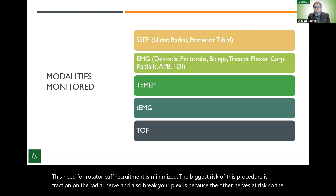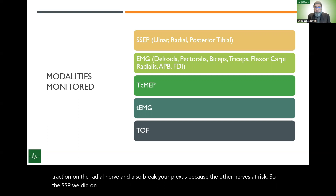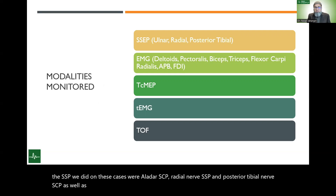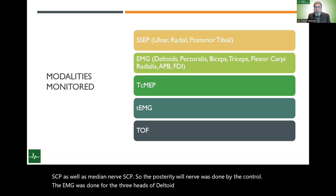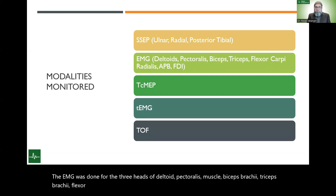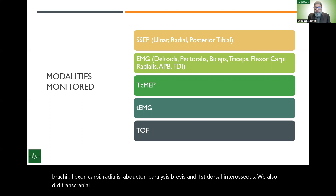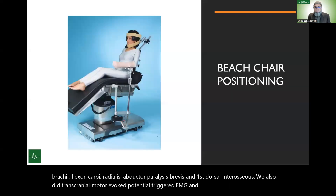The SSEPs performed on these cases were ulnar nerve, radial nerve, posterior tibial nerve, and median nerve. The posterior tibial nerve was done as a control. EMG was done for the three heads of the deltoid, pectoralis muscle, biceps brachii, triceps brachii, flexor carpi radialis, abductor pollicis brevis, and first dorsal interosseous. We also did transcranial motor evoked potentials, triggered EMG, and train-of-four continuously to monitor the level of muscle relaxant.